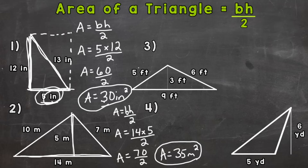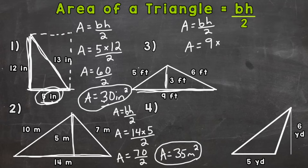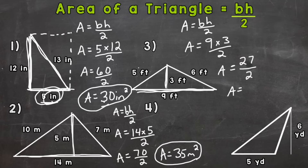For number 3, let's start by writing out our formula — it's always a good habit to start by writing out the formula. Area equals base times height divided by 2. Now we plug in: the base of the triangle is 9, times the height of 3 feet, divided by 2. So we get 9 times 3 is 27 divided by 2. This one's actually going to give us a decimal — 13.5 square feet.